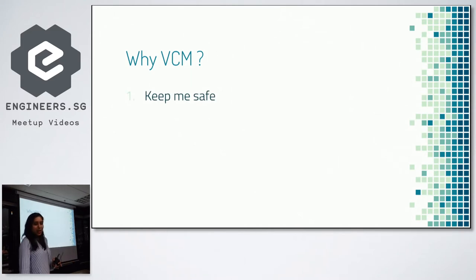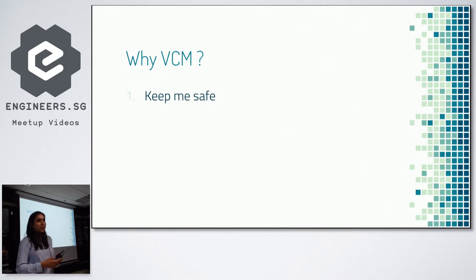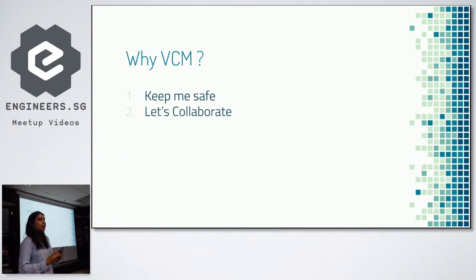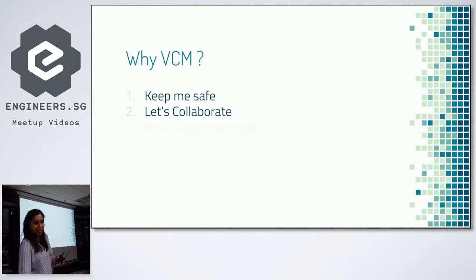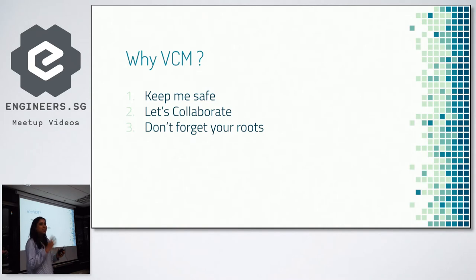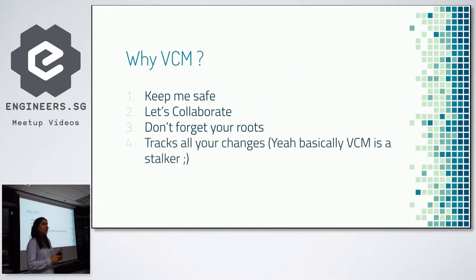Why did VCM, or version control management, start? Firstly, if you are developing code on your computer, you are never sure if your computer just busts out — where can you find your code? So the first and most important requirement was keeping the code safe. If you want to collaborate with someone else, VCM helps with that. Two people working on the same code in different places, even different countries, can use this to collaborate. It also means: don't forget your roots — if you've grown from a small project to a large one, have the versions stored so you can always go back.